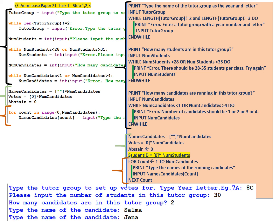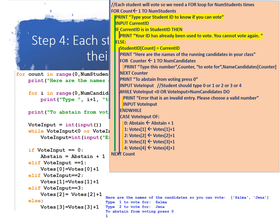Here's the pseudocode from the task 1 video. The beginning is the same — we input and validate the tutor group, input and validate how many students are in the group, and input and validate how many candidates are running. Then names candidates is set to an empty string array of num candidates size. Votes equals 0 times num candidates. Abstain is 0. We add the extra line: student ID equals 0 times the number of students, giving us an empty array to fill with the 30 student IDs. At the end of the pseudocode, a for loop inputs the names of the candidates. That was the tutor section of the pseudocode.